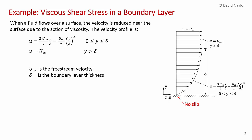Whenever fluid flows over a surface, it sticks at the surface, so at the surface you have no velocity. But as you move away from the surface, the velocity increases and eventually approaches what we call the free stream velocity. There's a region near the surface where the fluid is slowed down because of the action of viscosity. Right at the surface we have the no-slip condition — no velocity — and then the velocity slowly increases until you approach the uniform free stream condition.